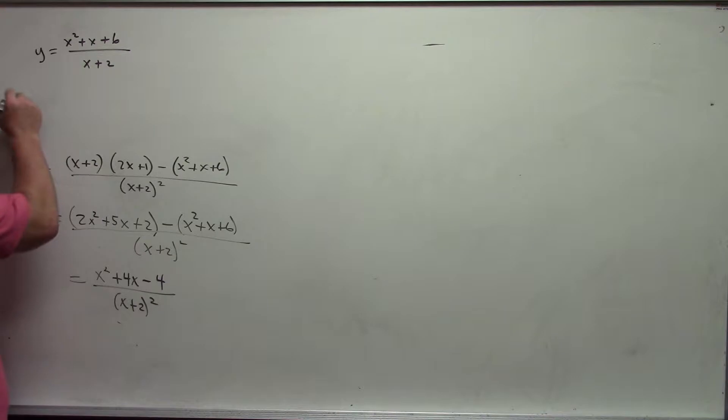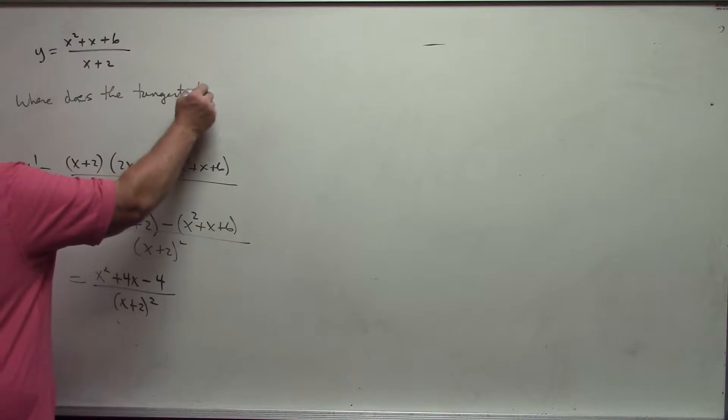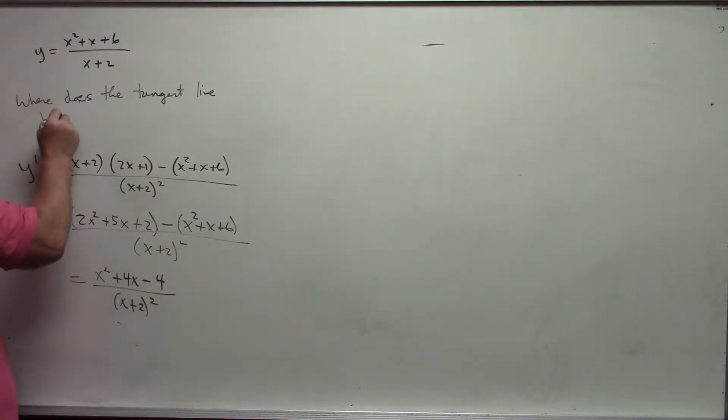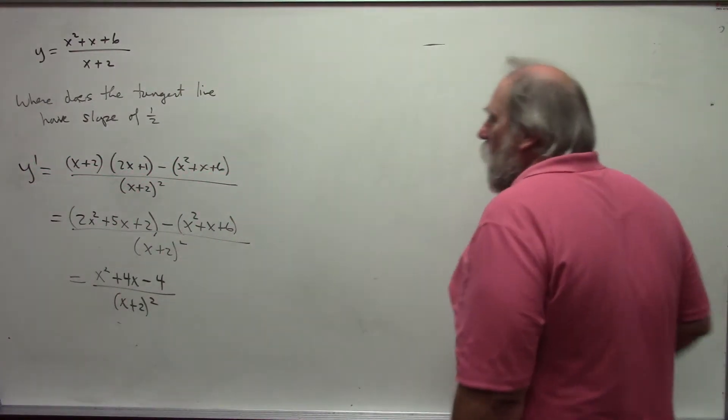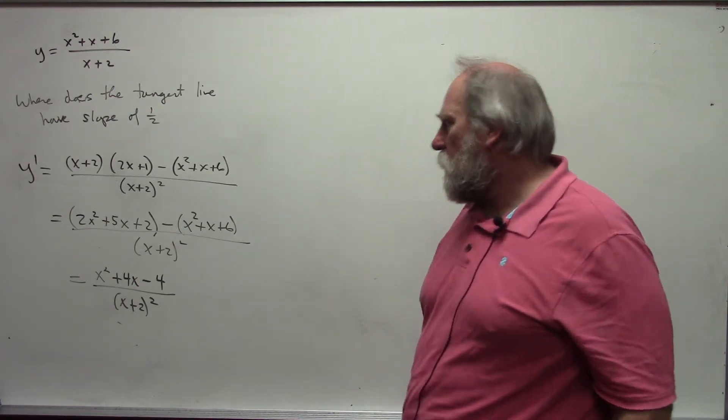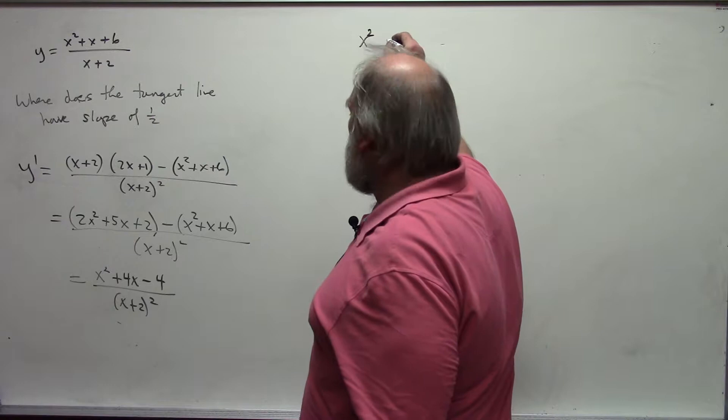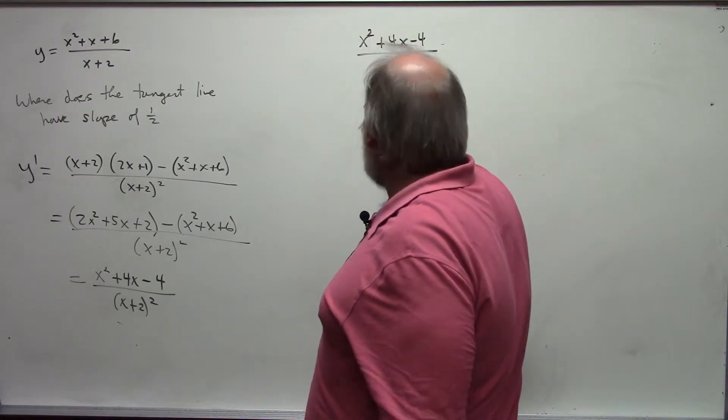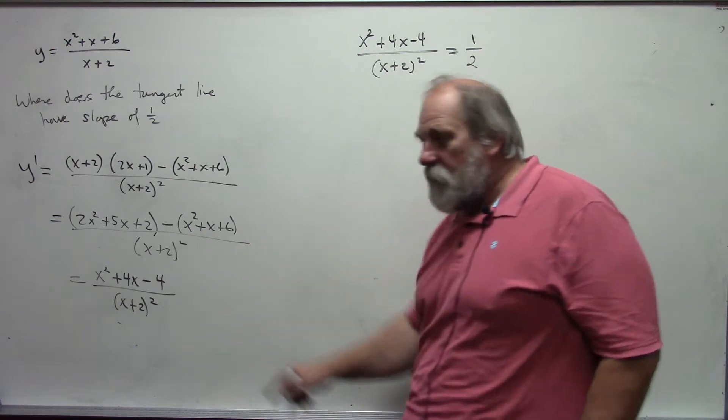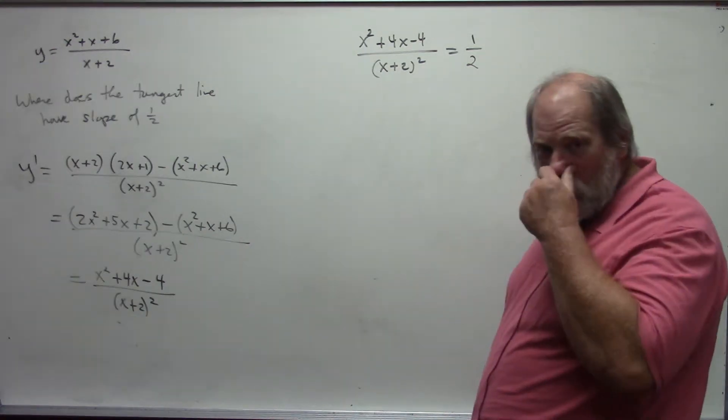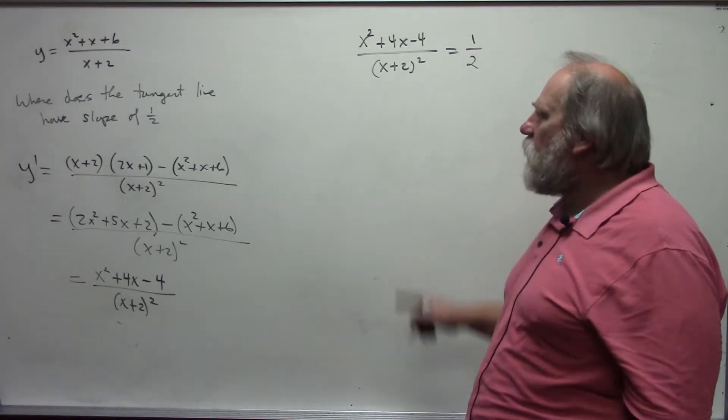Instead of finding the equation of the tangent line at x equal 1, now I want to know where does the tangent line to the curve have slope of 1 half? When is the derivative 1 half? So now I want to know where the derivative is a value. So we'll take my derivative, x squared plus 4x minus 4 over x plus 2 quantity squared, and I want to write this as an equation.